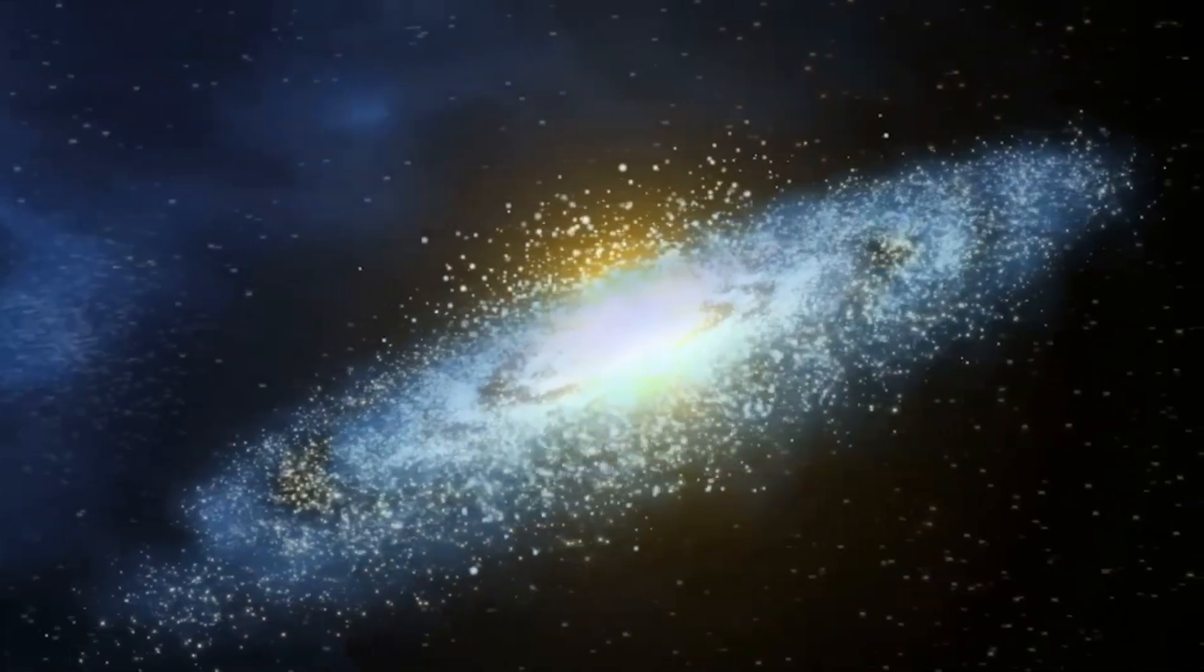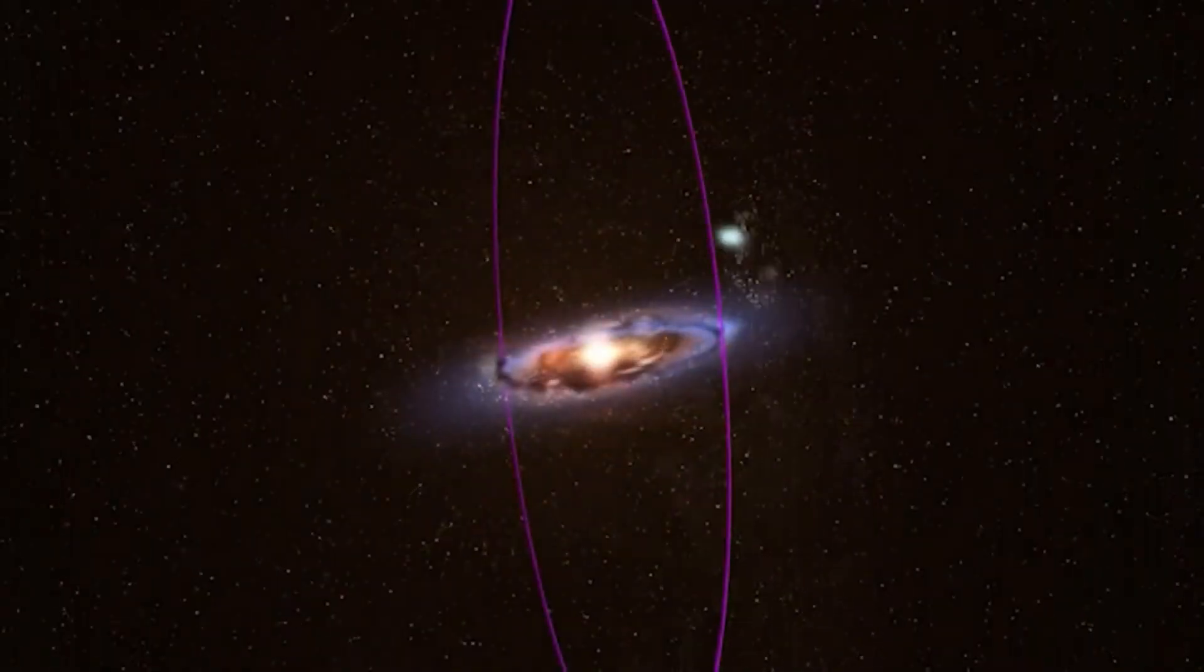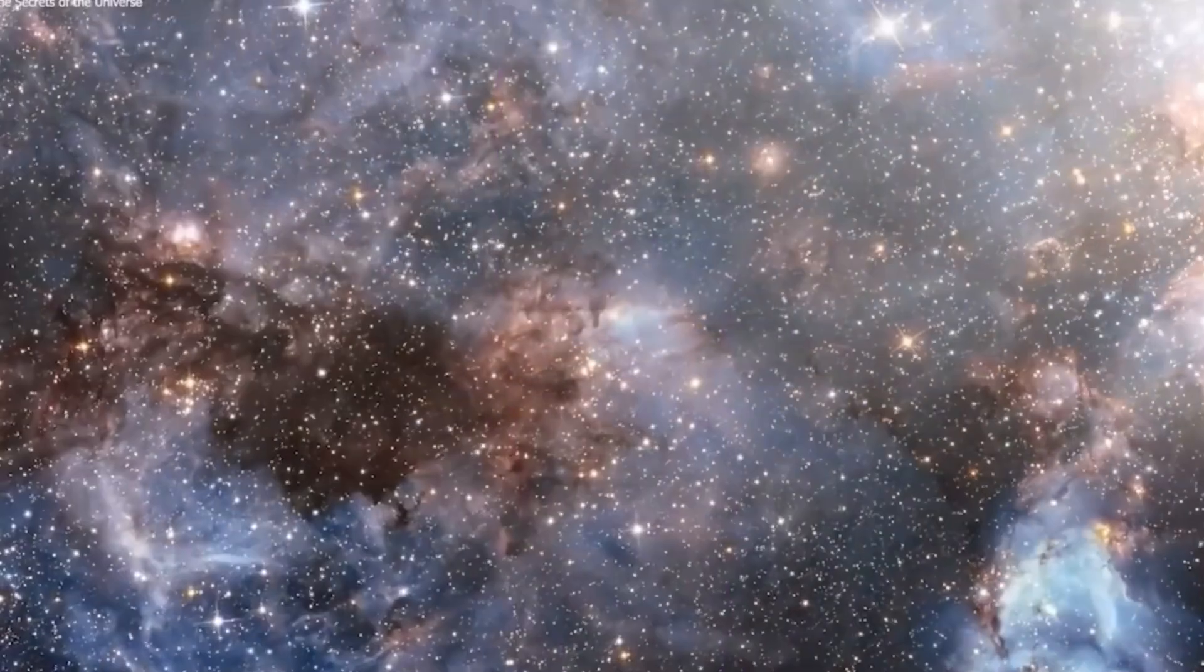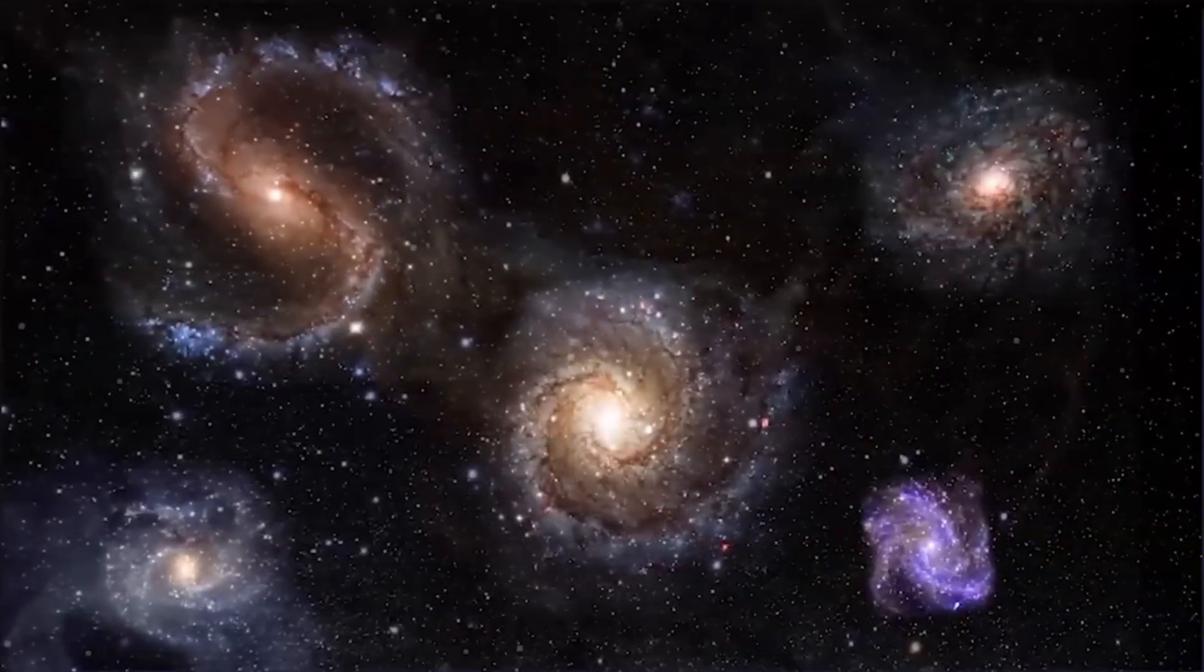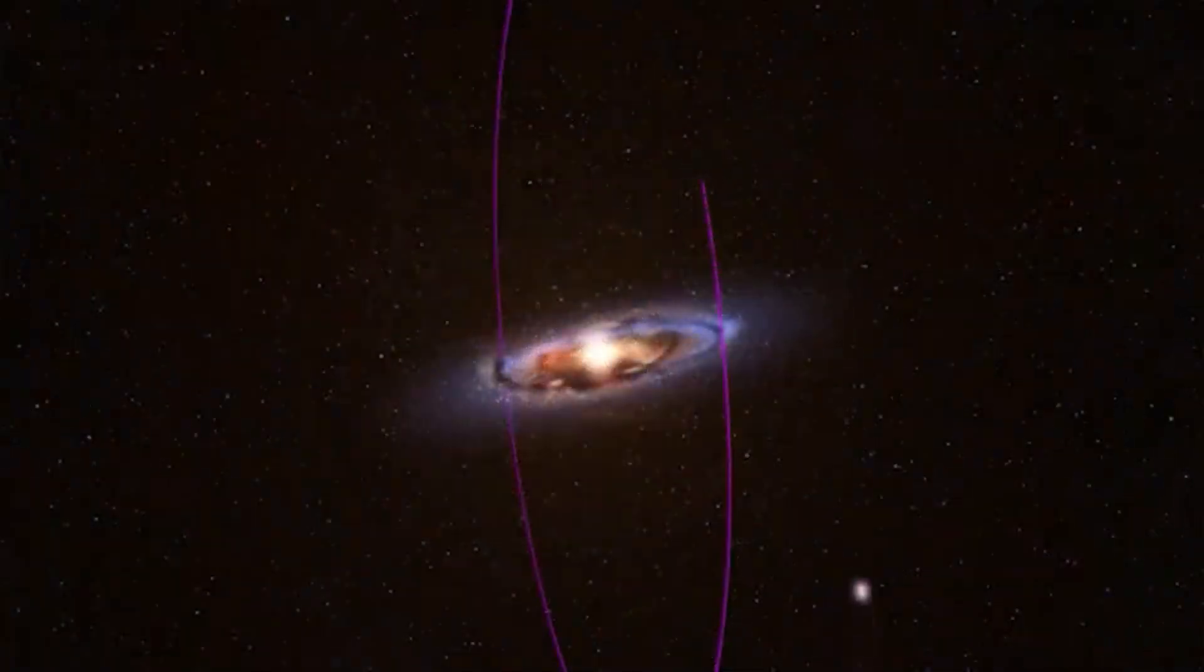Research and computer models show that many stars in the distant parts of Andromeda's halo came from smaller galaxies that Andromeda pulled in with its gravity. These smaller galaxies, probably tiny dwarf galaxies, joined with Andromeda, adding their stars over time.